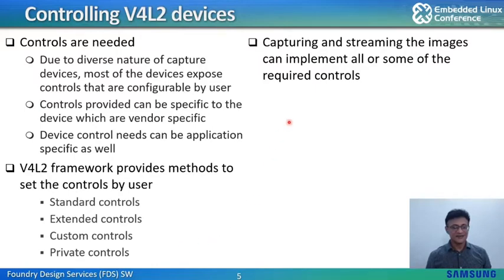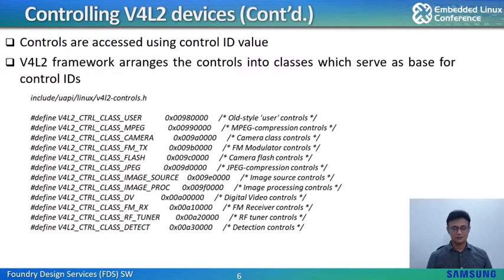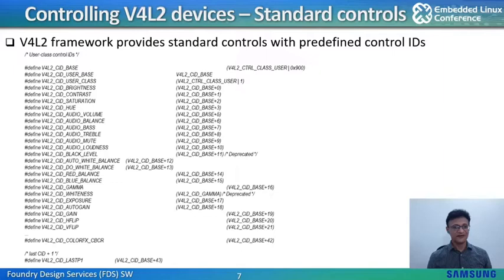Each available control is identified by its respective control ID value. The V4L2 framework arranges these controls into classes which serve as the base for control IDs, such as user controls, MPEG controls, or camera class controls, all the way up to color effects and RF and detection controls. V4L2 framework provides standard controls with predefined IDs. The user class serves as the base for these control IDs. Standard controls are defined for brightness, contrast, saturation, and all the way up to color effects. The last one, V4L2_CID_LASTP1, is not a control ID as such but serves as a tag when applications are querying for controls.